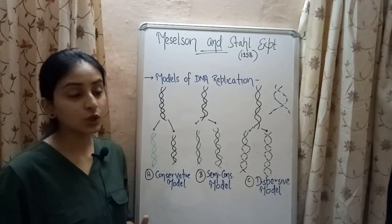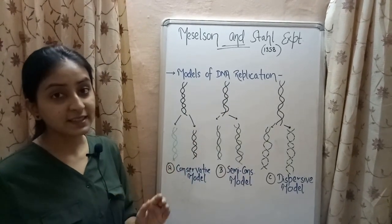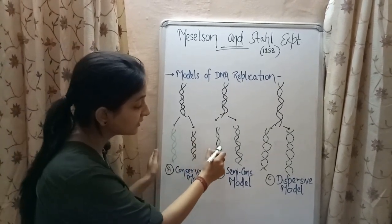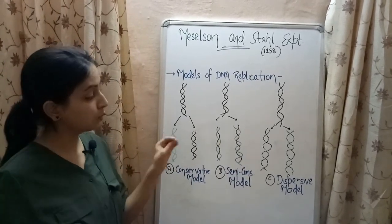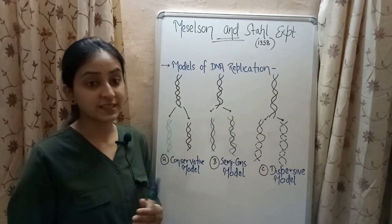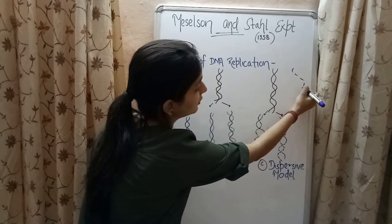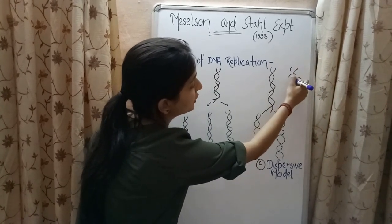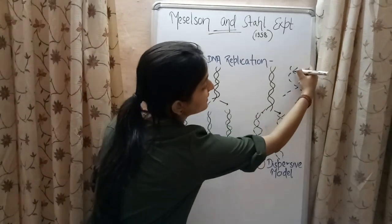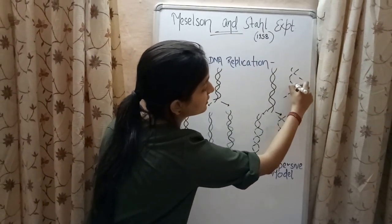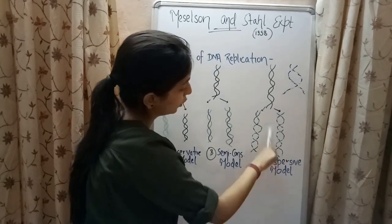According to the semi-conservative model of DNA replication, both the strands of the parental DNA act as template strands to which a newly synthesized strand gets attached, leading to the formation of two different DNA molecules. The dispersive model says that during replication, the double helical structure of DNA is broken down into double stranded segments, and to these segments the double stranded segments of a newly synthesized DNA get attached, leading to the formation of two new DNA molecules.